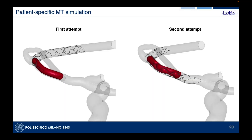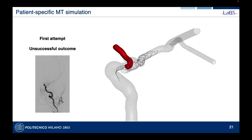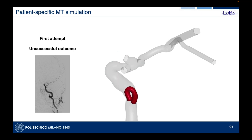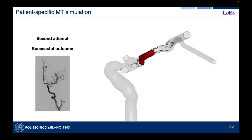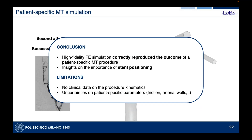The key difference between the first unsuccessful and second successful attempt was stent positioning. In the first attempt, the stent was too distant from the occlusion; in the second, it was correctly positioned. We incorporated this information into our model. The simulation of the first attempt shows the clot is not well engaged due to wrong positioning and is lost inside the vasculature. In the second attempt with correct stent positioning, the thrombus is well integrated into the device and successfully removed.